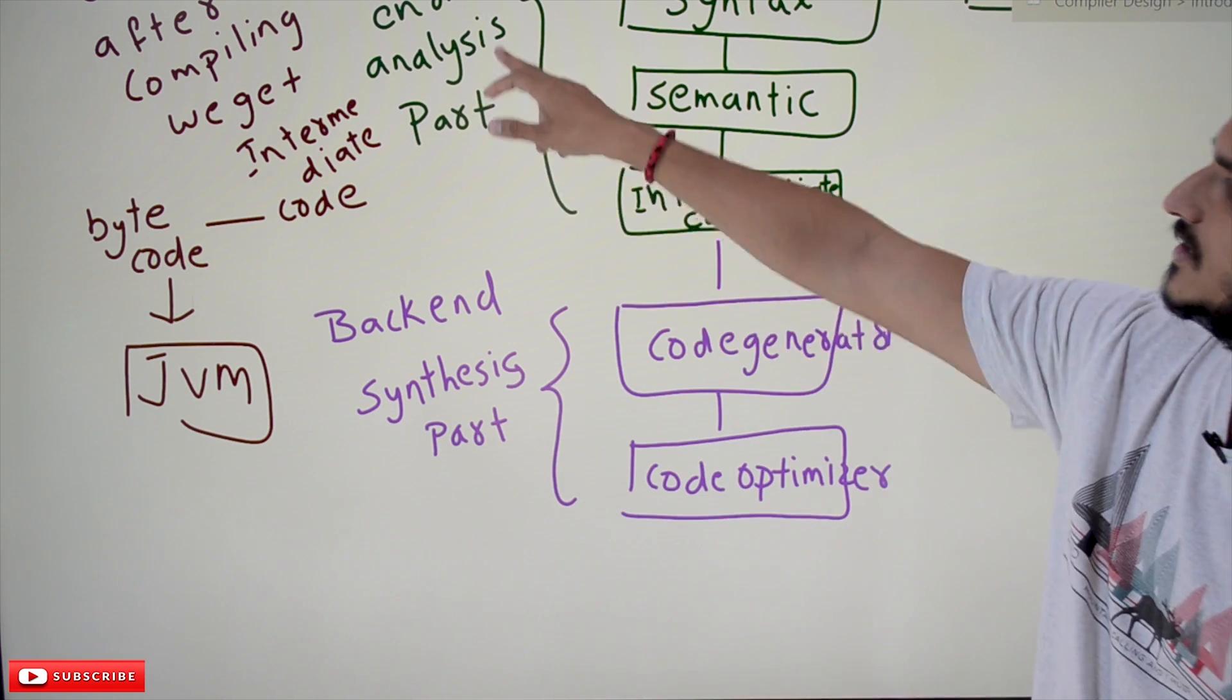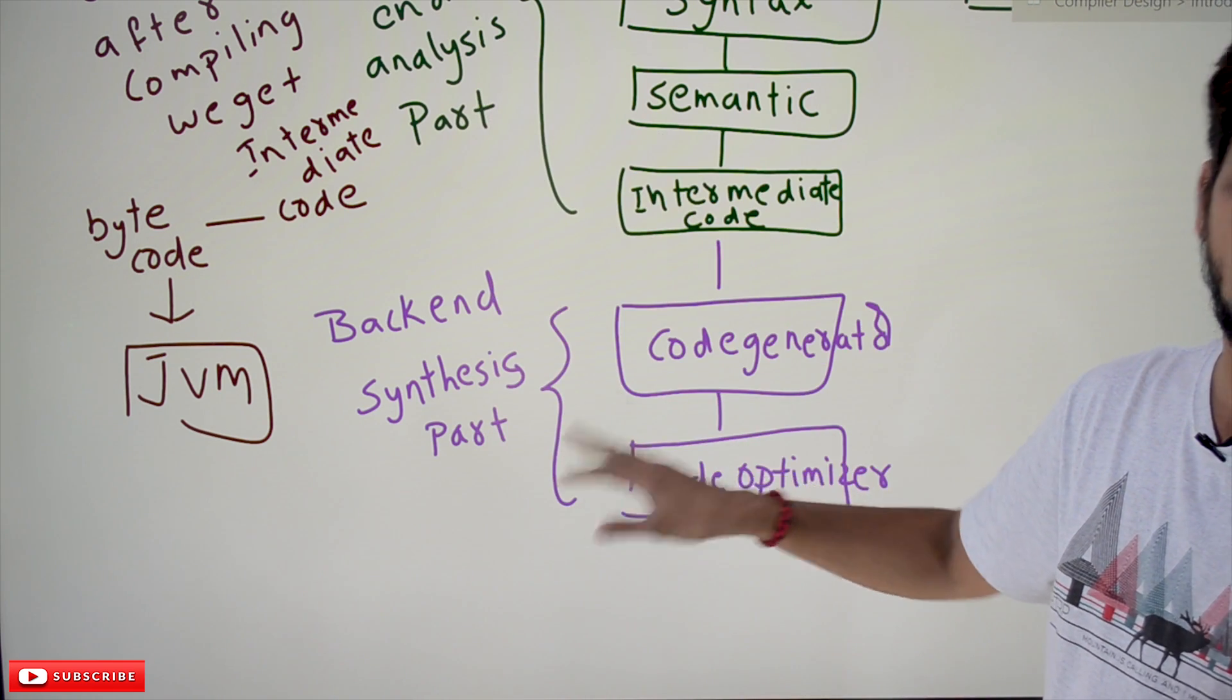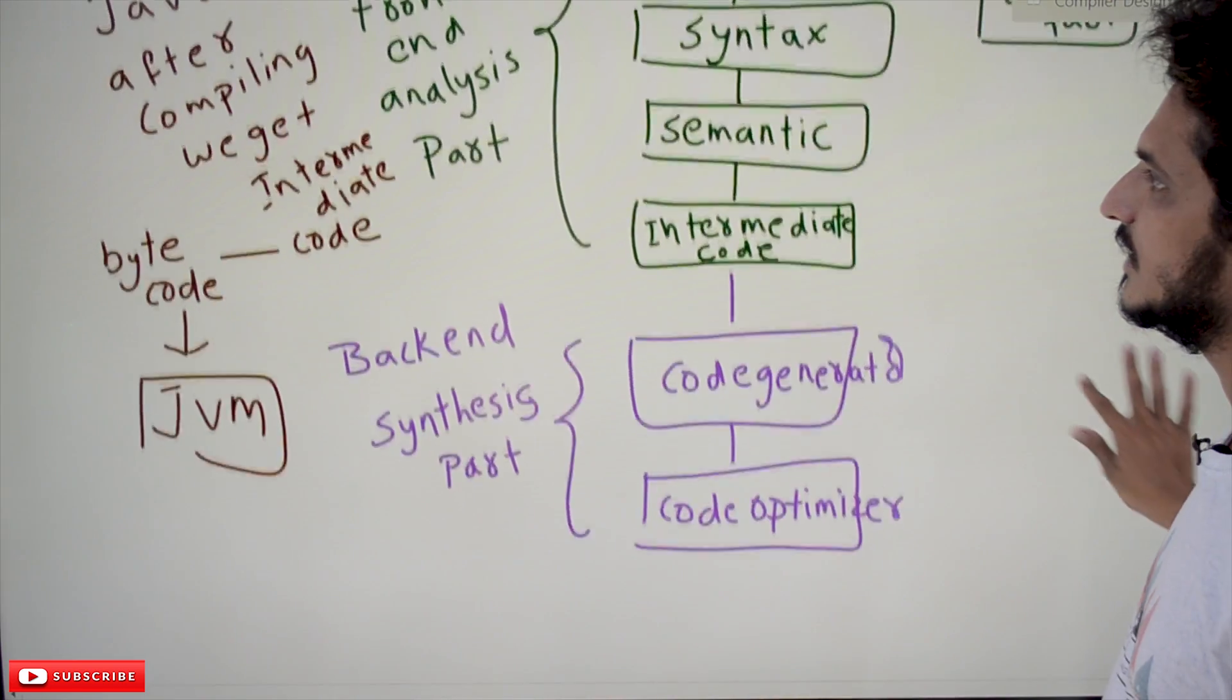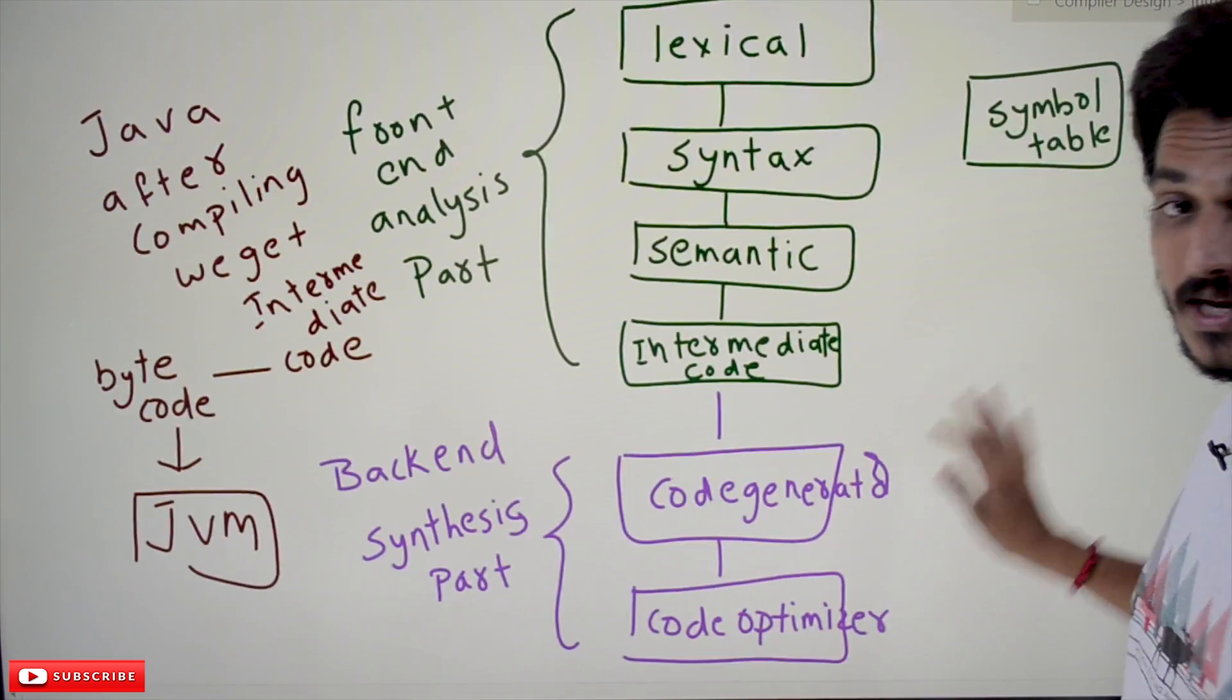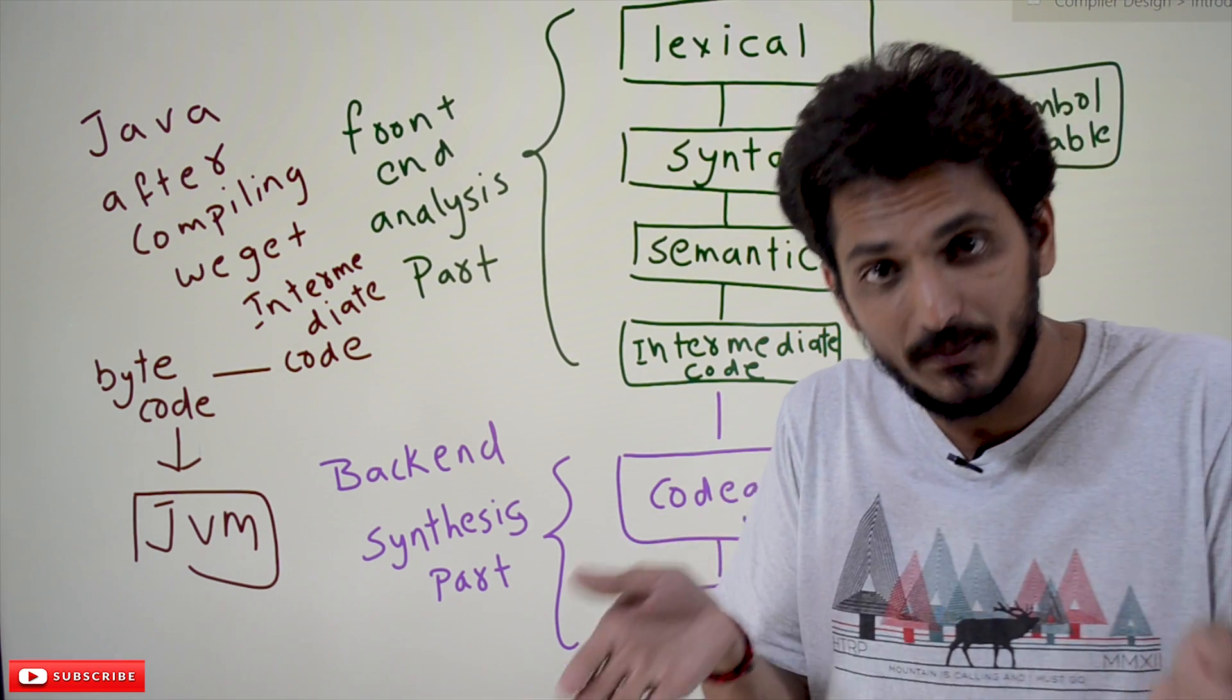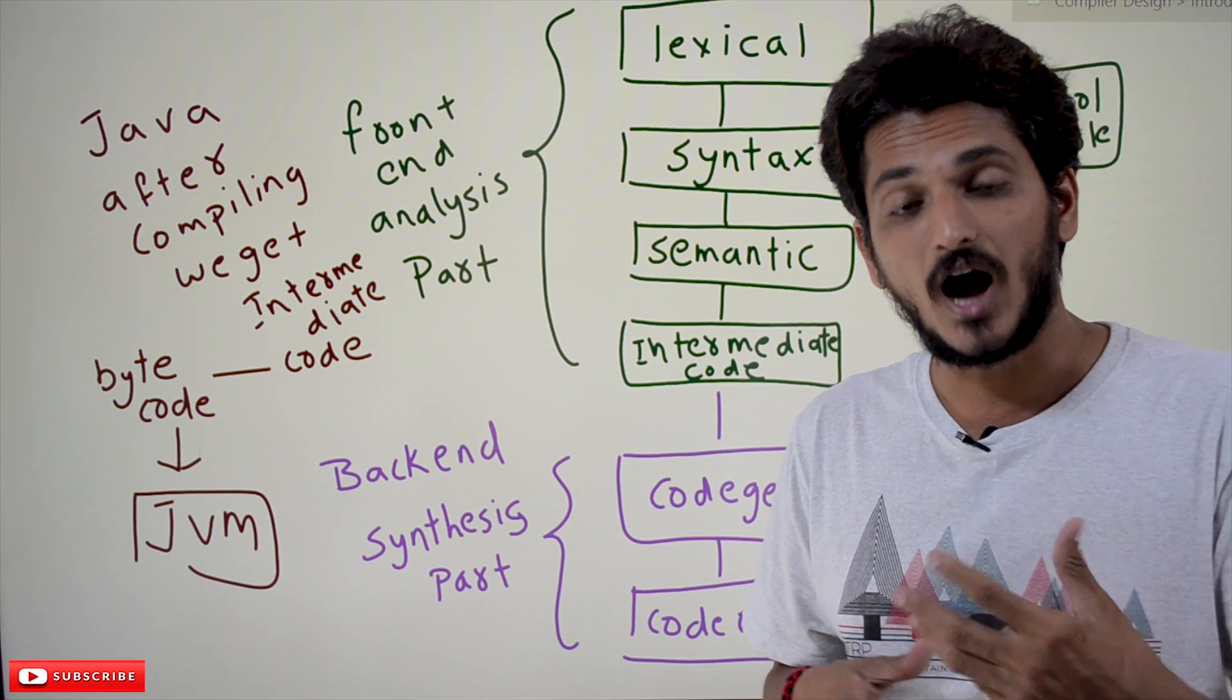Analysis part, synthesis part—up to here it's easy to understand. The important point you have to understand is in our Java programming language. We discuss that Java is platform independent. Why? How does it become platform independent? Let's try to understand here.